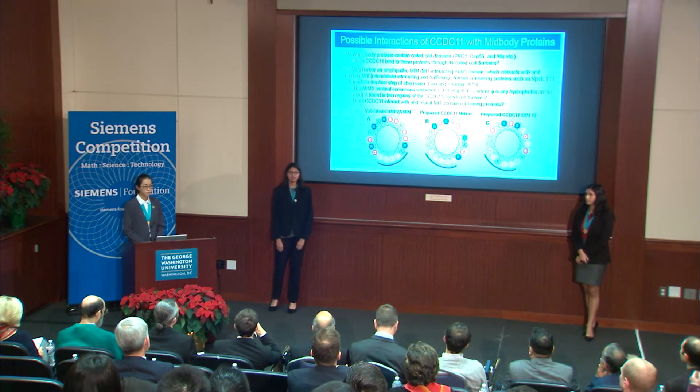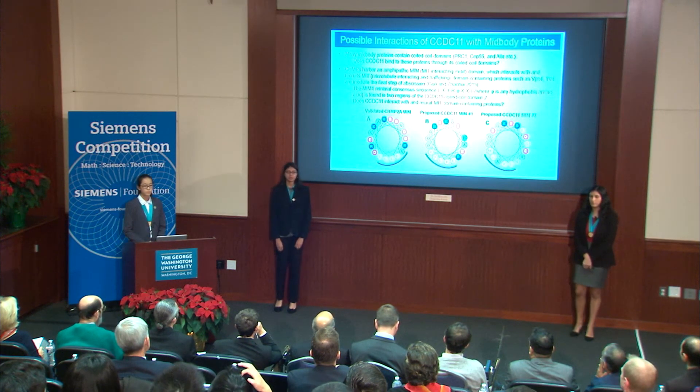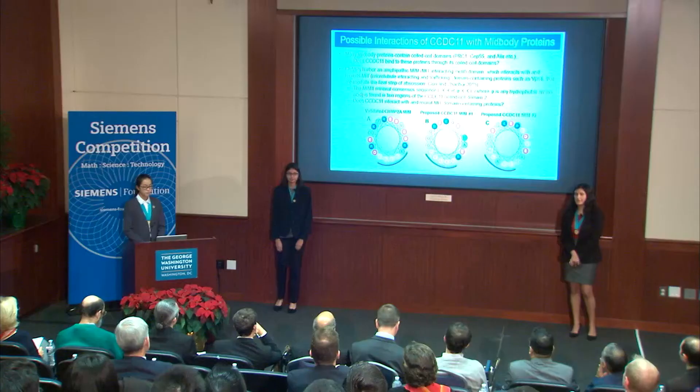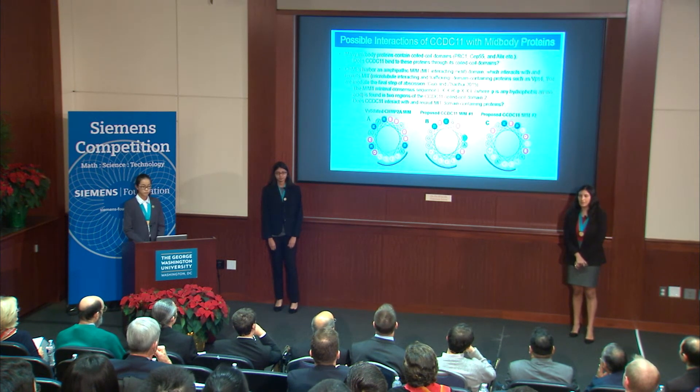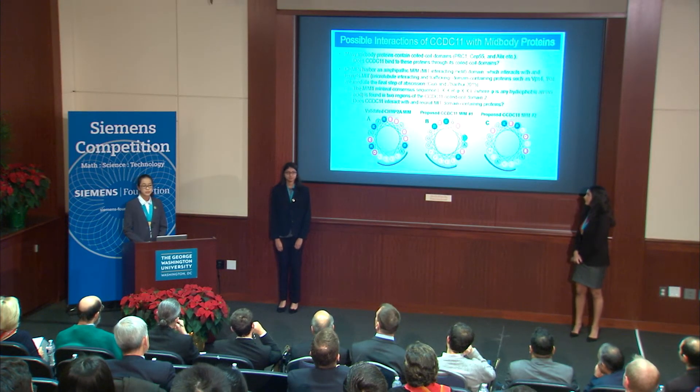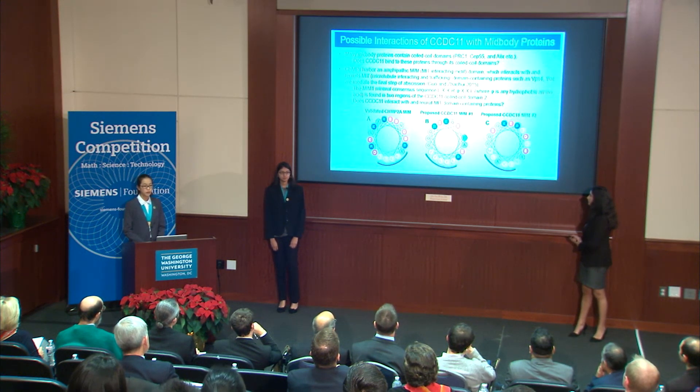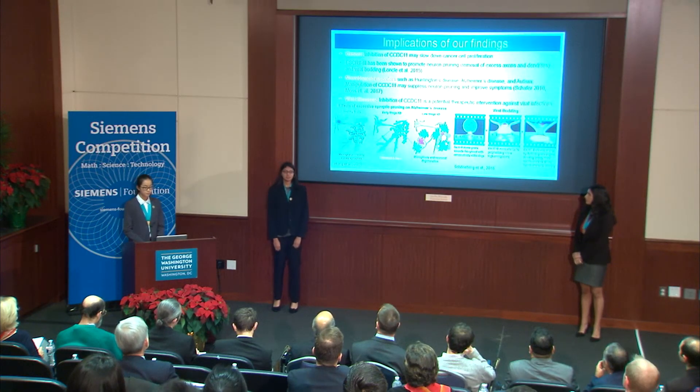It is unknown how CCDC11 interacts with other mid-body proteins. However, we propose two models. The first involves coiled-coil domains contained in many mid-body proteins such as ALIX, TSG101, and CEP55, through which CCDC11 may interact directly. The second possible interaction is an MIT-MIM helical interaction: CHMP2A is known to recruit VPS4 through a MIM1 sequence on its C-terminus. We inspected the CCDC11 protein sequence and found two MIM1 motifs. Using the HeliQuest web server, we found that the MIM1-like sequences in CCDC11 were amphipathic in nature with a distinct hydrophobic phase and highly charged patch, indicating that CCDC11 may bind and recruit MIT domain-containing proteins such as VPS4 to the mid-body through its MIM1 motifs.